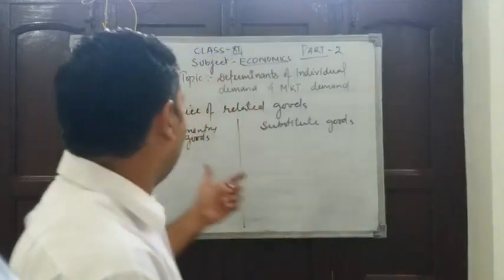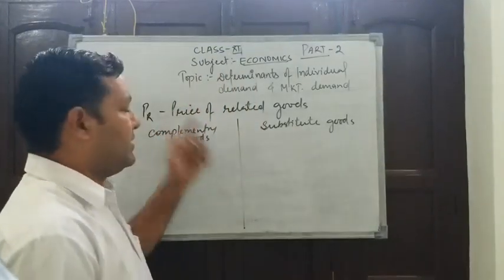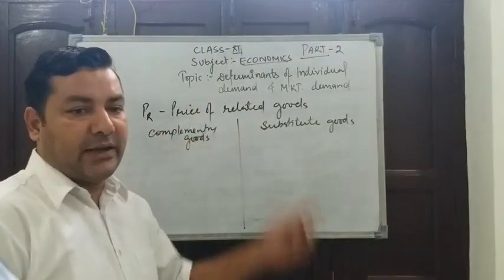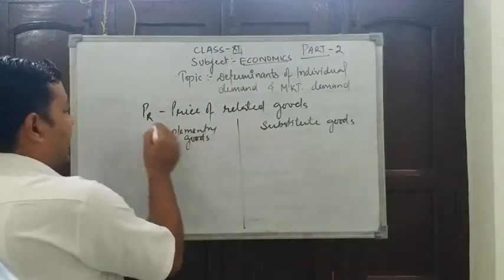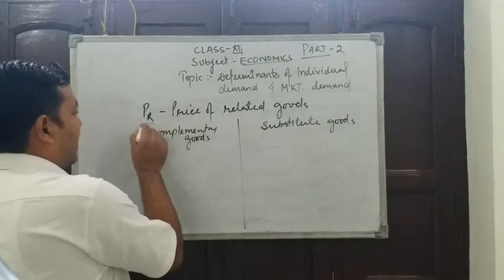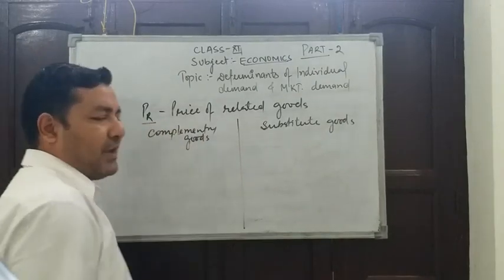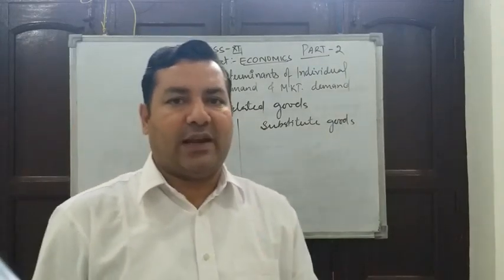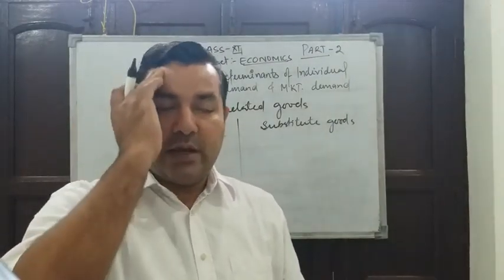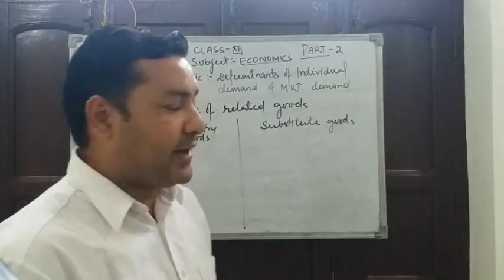The second determinant is PR, which means the price of related goods.